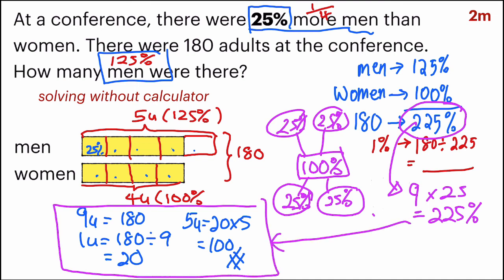Then you would not have to draw the model to help you solve this question. You can easily just take nine units and divide it up to find one unit and multiply it by five.